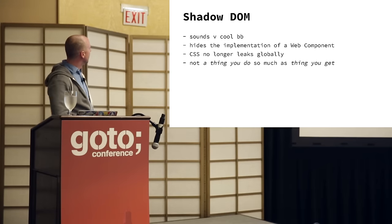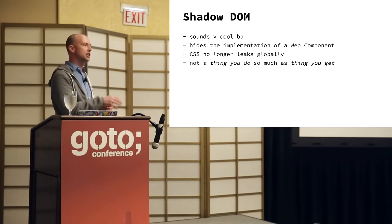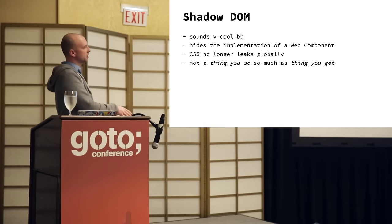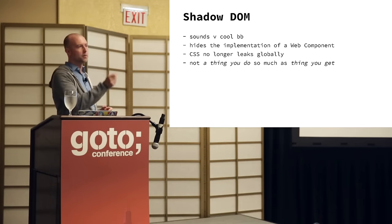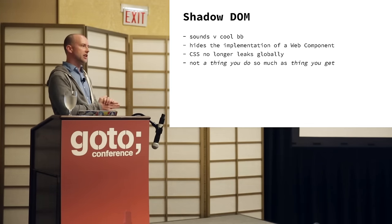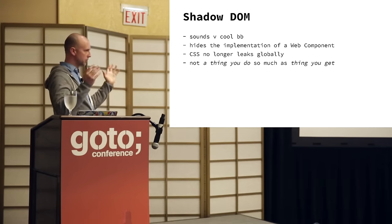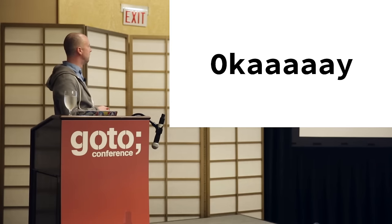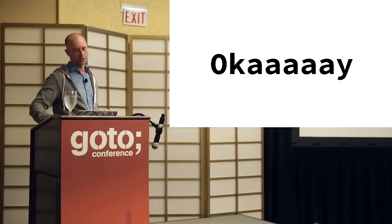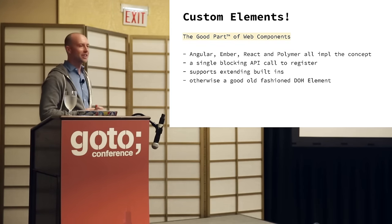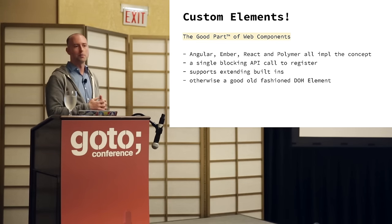The Shadow DOM — which sounds hella cool — hides the implementation. Built-in components right now, you don't have to drill in and see what's going on. A good example is the video player in your browser — you don't see individual elements unless you want to. The Shadow DOM would give us this capability in the browser. In the last couple of weeks a lot of browser implementers have concluded that maybe having totally global CSS is a bad thing after all, and that we might get some level of encapsulation for styling. But I don't know when that's going to land. Then we get to custom elements — and this is the good part. All the major frameworks implement the concept in some fashion, which gives us good validation that it's probably an okay idea.